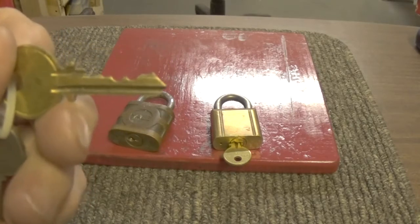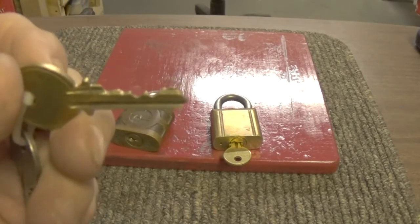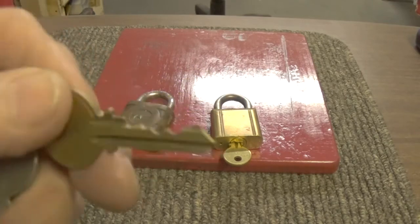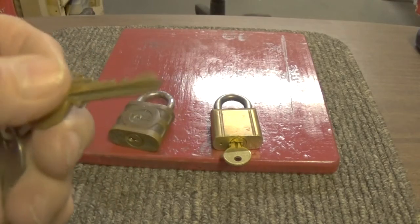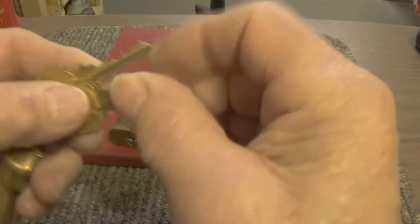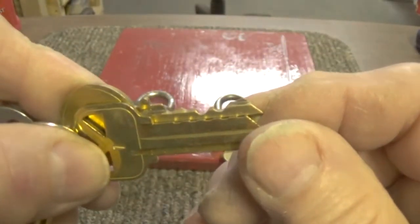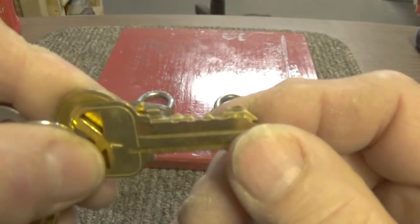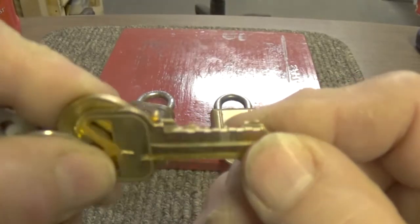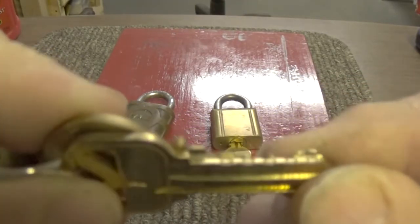So I take a key like this Quickset and I check the bitting on the key and see how close they line up. If they line up real close, I'll go ahead and make a cut on the key just like the cut on this Quickset.